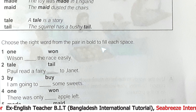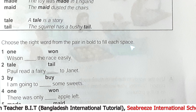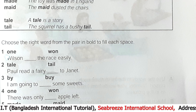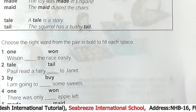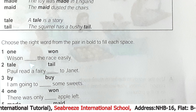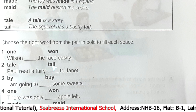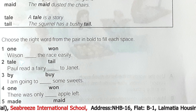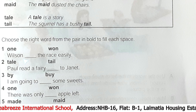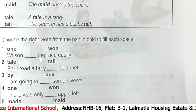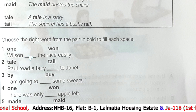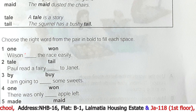Now the question is: choose the right word from the pair in bold to fill each space. Number one: Wilson dash the race easily. What did Wilson do? Wilson won the race easily. So the answer is 'won.'